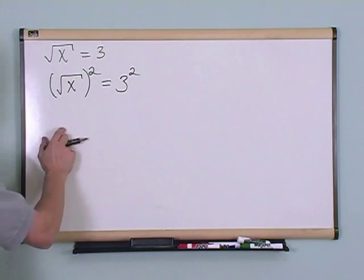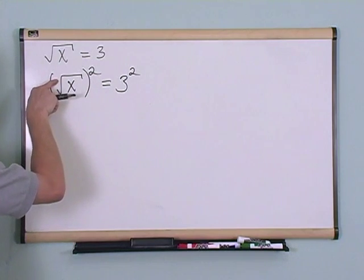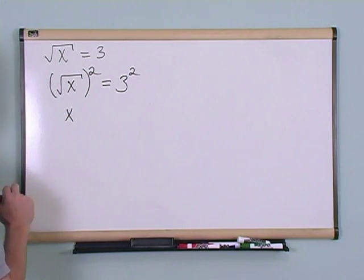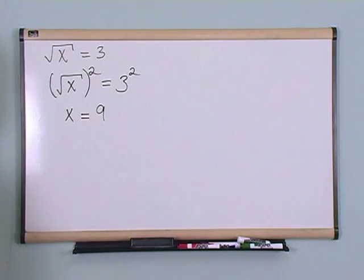What you will find when you do that is, this square kind of cancels with this square root. So what you're left with is just x by itself, and that's equal to 3 squared, which you know by now is just equal to 9.